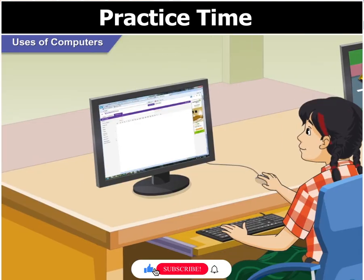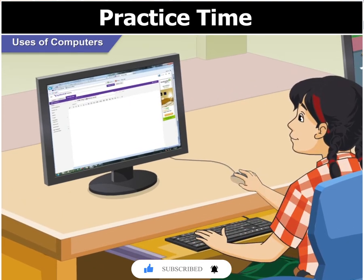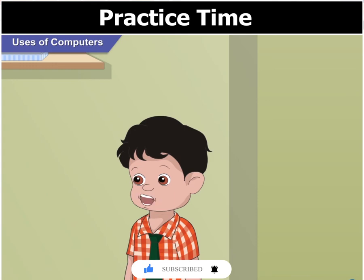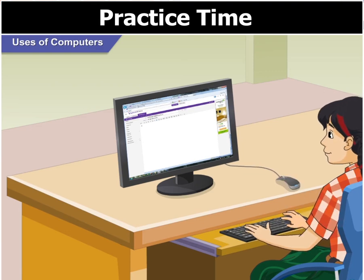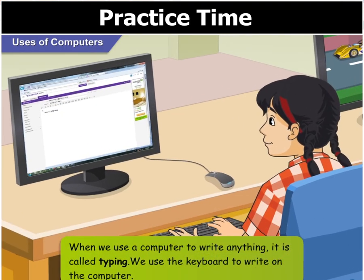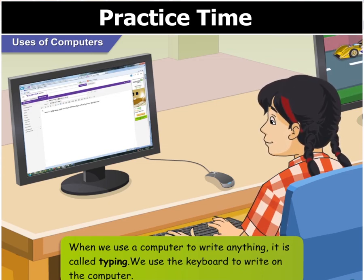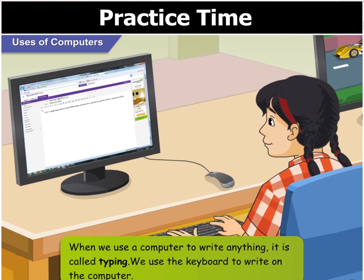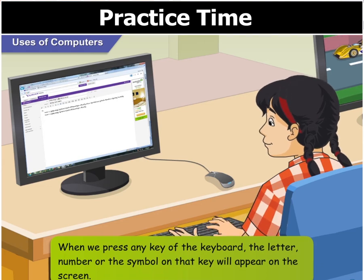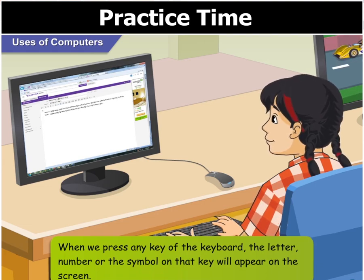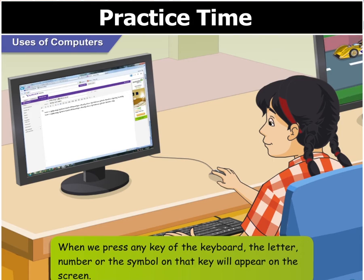Now, see, here Rani is using the computer to write a letter to her friend. I thought we always need a pencil and a paper to write a letter. That is how you write a letter normally. When you use a computer to write anything, it is called typing. We use the keyboard to write on the computer. When we press any key of the keyboard, the letter, number, or the symbol on the key will appear on the screen.